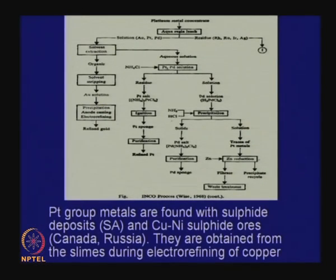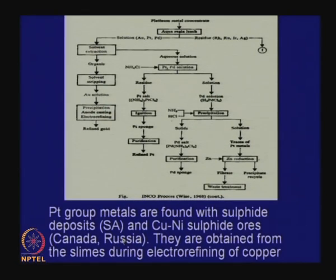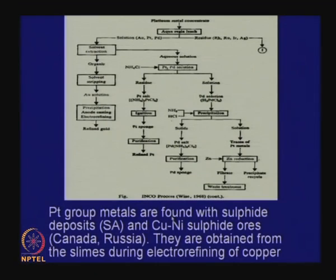Platinum group metals are not found as chunks of metal. They are found with sulfide deposits of South Africa or copper-nickel sulfides in Canada and Russia. Sulfides are very good solvents for precious metals - gold, silver, and platinum. In South Africa's sulfide deposits there are lots of platinum; copper-nickel deposits of Canada and Russia also have platinum.